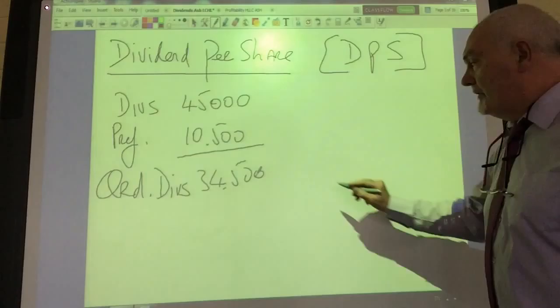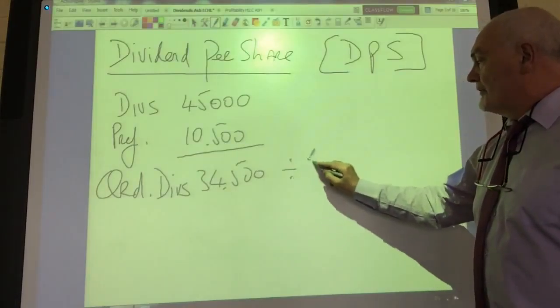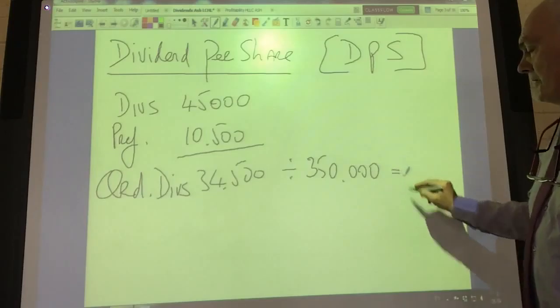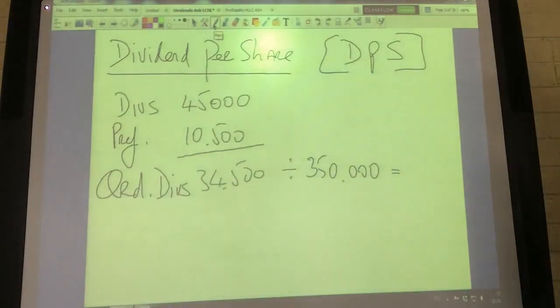That 34,500 in ordinary dividend is being shared among 350,000 ordinary shares, giving us an ordinary dividend of 9.86 cents per share. On its own we can't tell if that's any good; we really have to look at the market price of the share, which if we look back at the balance sheet is 1.60.